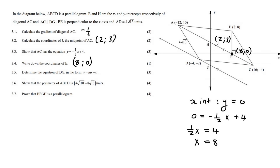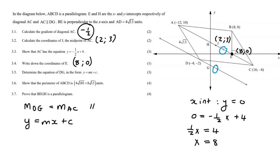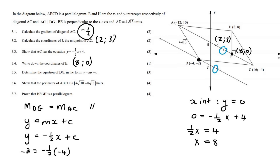Question 3.5: Determine the equation of DG. DG is parallel to AC, so they have the same gradient. The gradient of DG is therefore negative a half. The equation is y equals mx plus c with m equal to negative a half. Plugging in the point (minus 4, minus 2): minus 2 equals minus a half times minus 4 plus c, so minus 2 equals positive 2 plus c, giving c equal to negative 4. The equation is y equals negative a half x minus 4.